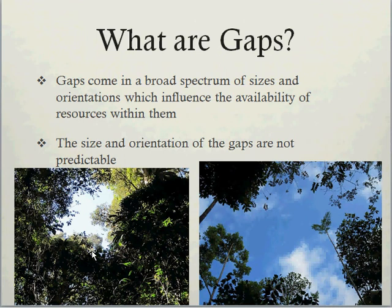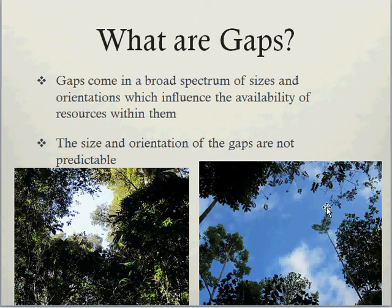Smaller gaps mean less light, less temperature change, and less moisture because the roots are still growing underneath the gap. Orientation of gaps is also important. Most gaps aren't circular — they are actually elongated in shape, because when a tree falls over, it takes out a section of the forest which is elongated or oval or cigar-shaped. So a gap may be oriented north-south or east-west or anywhere in between.